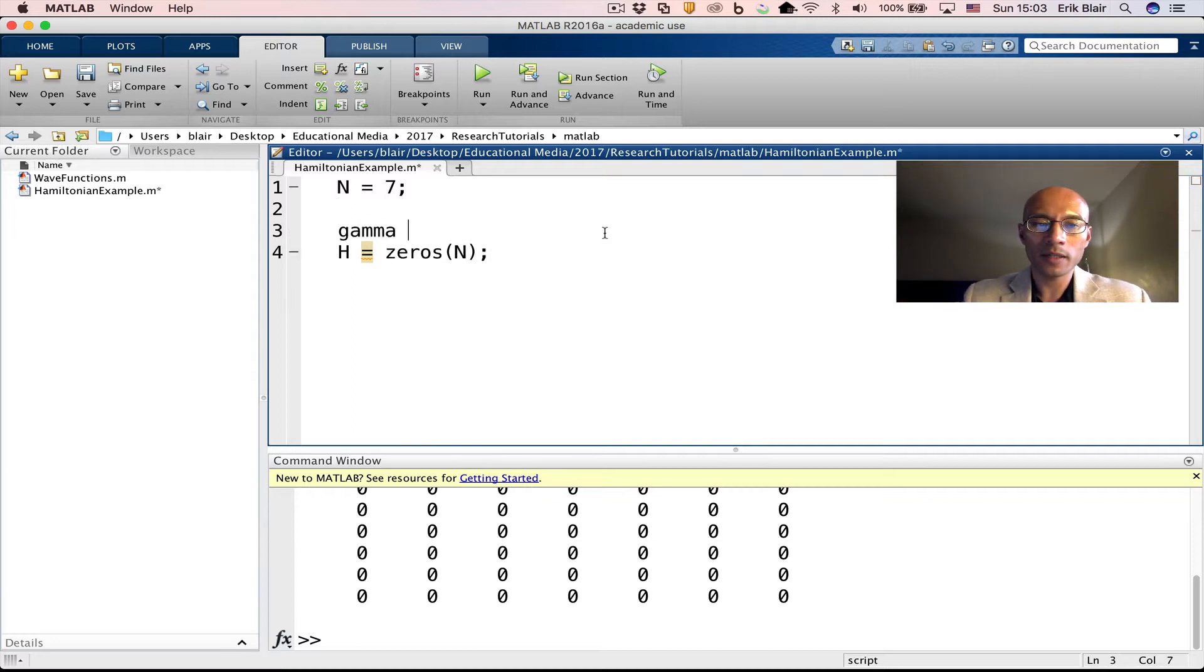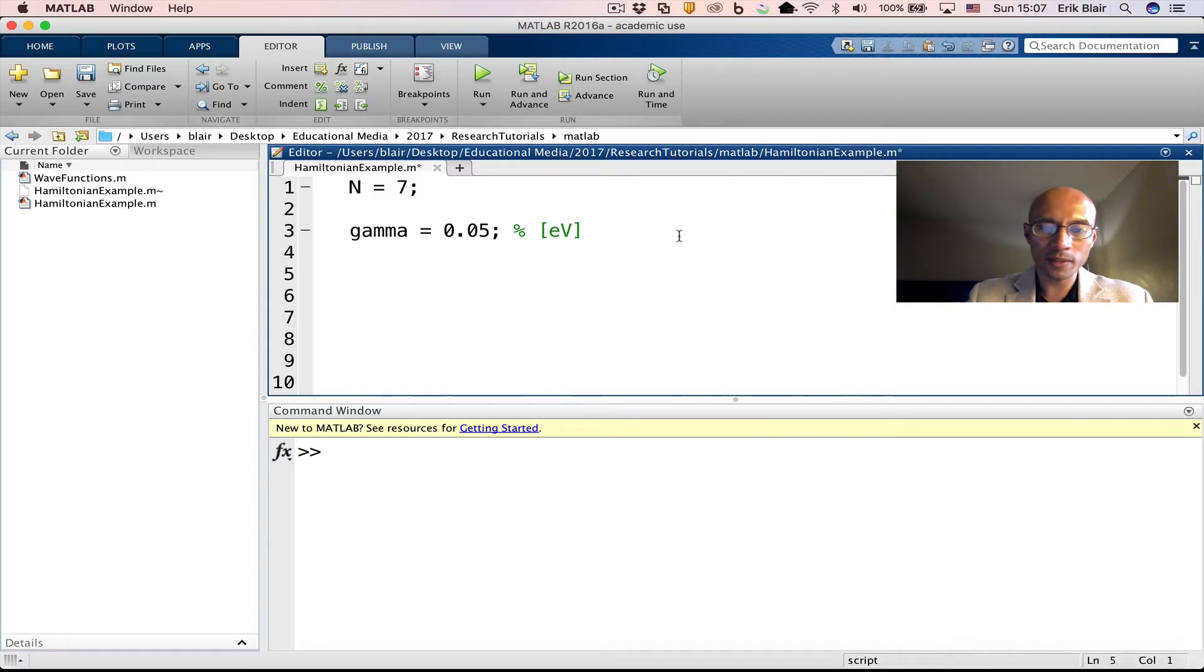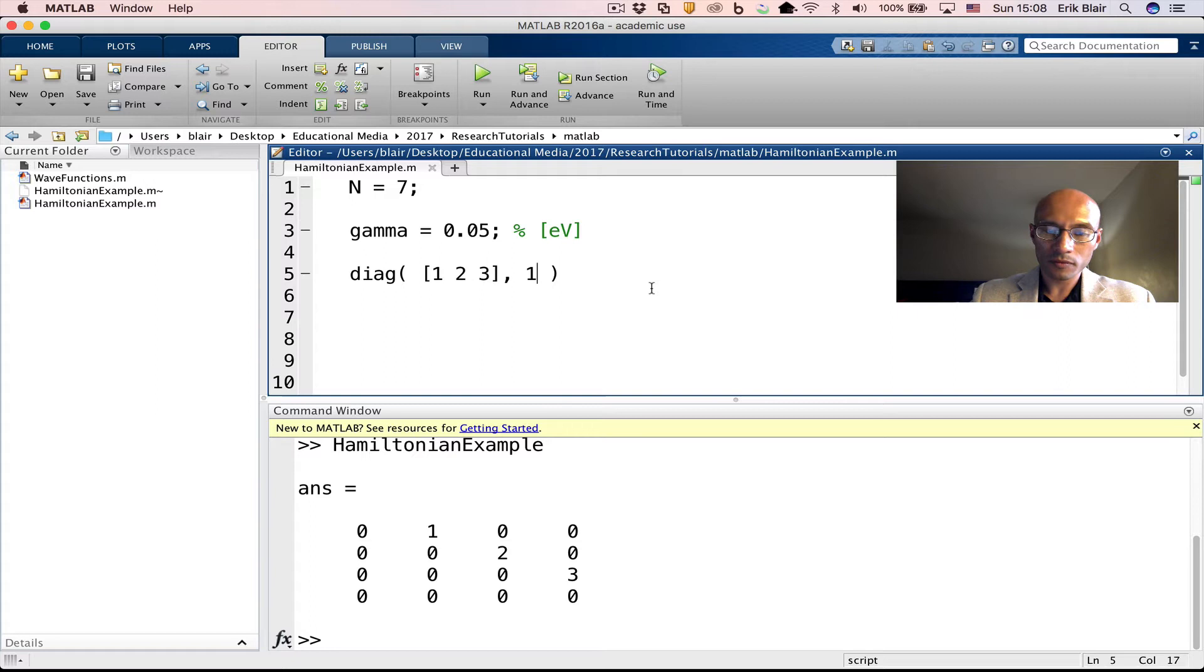Now, we said that the tunneling energy, gamma, equals 50 mil of electron volts. So we write that as 0.05 electron volts. And now we want to put that into the Hamiltonian. Okay, so now we're going to change it a little bit. I've deleted H. We're going to do something else with H now. We're going to use the Diag command. So if I use the Diag command and I give it a row of values, so for example, one, two, three, it gives me a diagonal matrix with those values on the diagonal. In this situation, we want values in the off diagonal. So I can put them in the super diagonal by putting a one as the next argument to the Diag command. And notice now I get a four by four matrix and these elements are in the off diagonal.